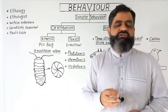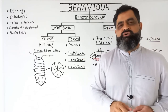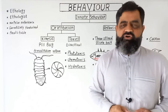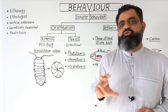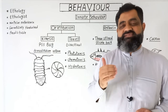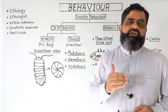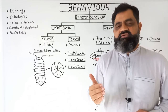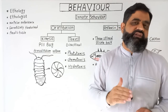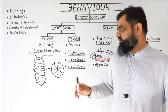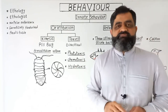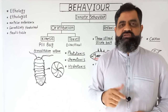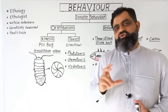Looking at phototaxis, Euglena — which is a protist belonging to protozoa — usually moves towards light because it needs light for photosynthesis, but it also moves away from intense light. If it moves towards the light, that is positive phototaxis; if it moves away from the light, that is negative phototaxis.